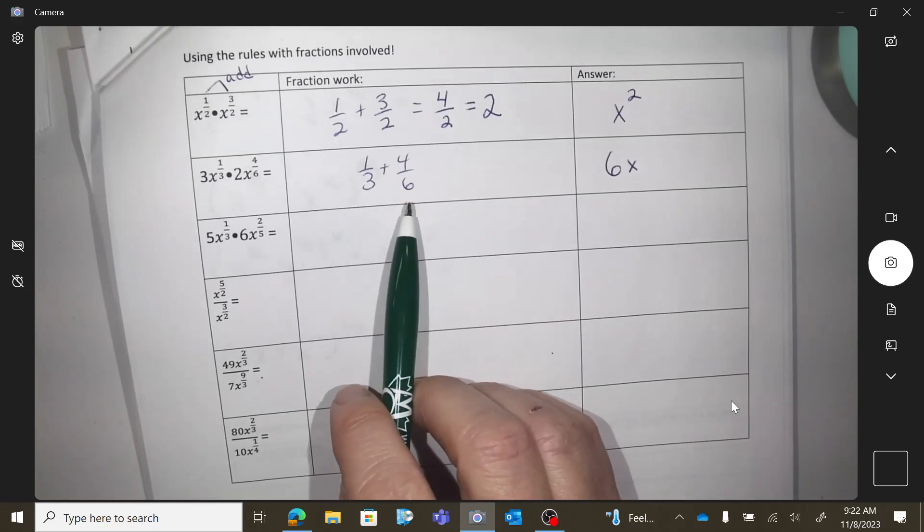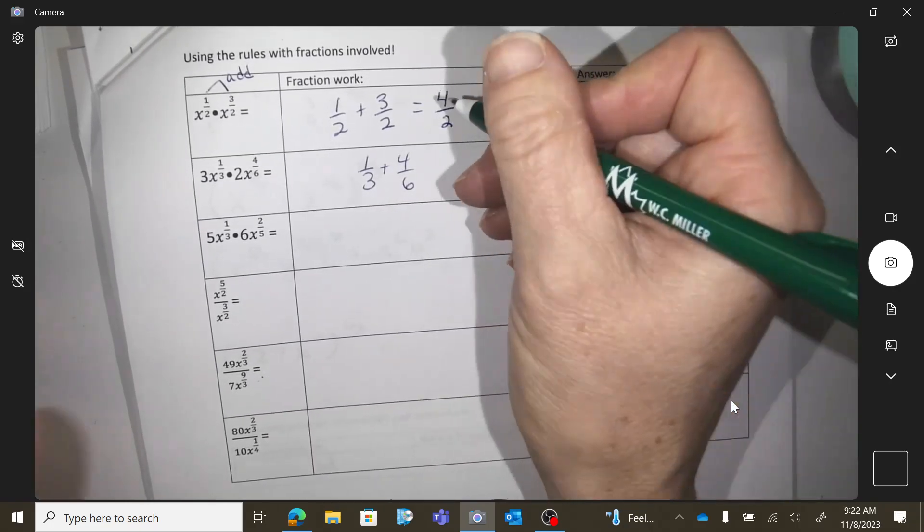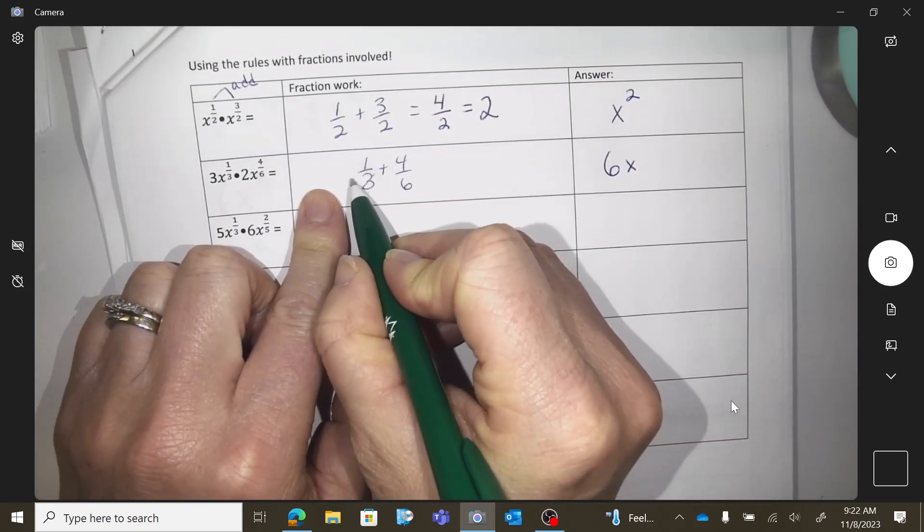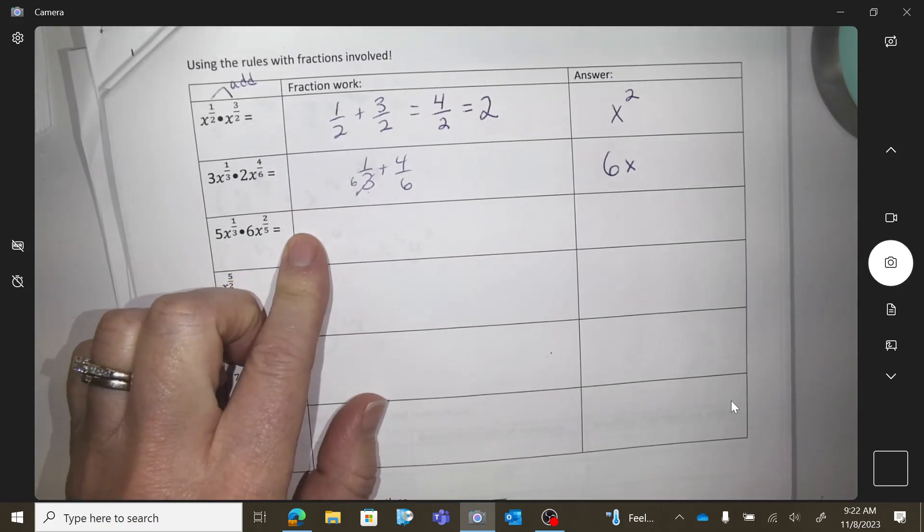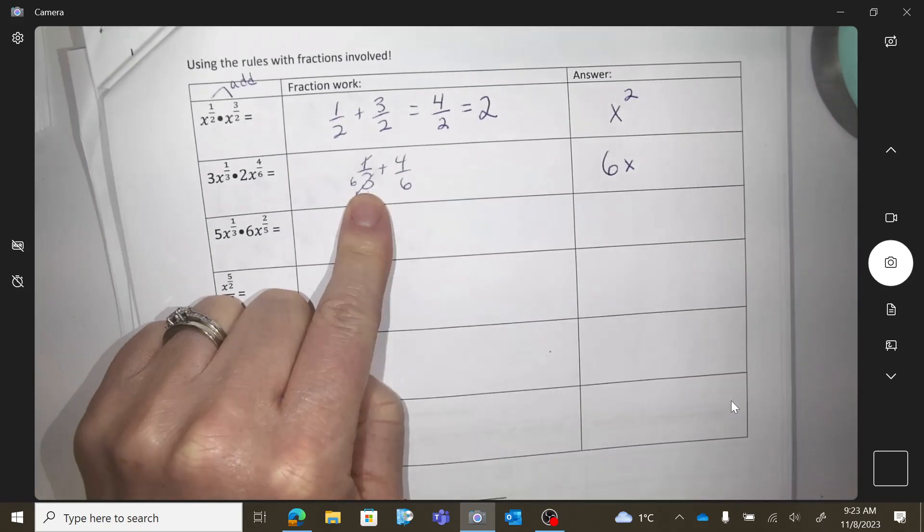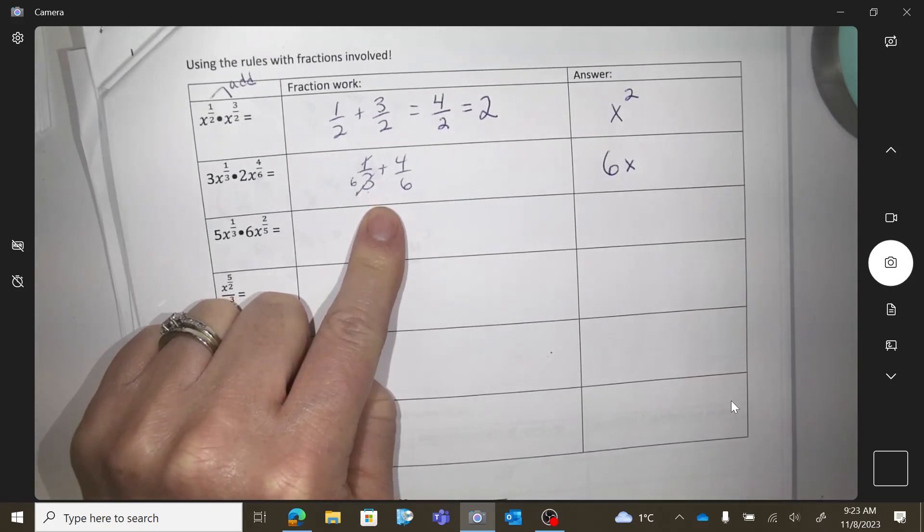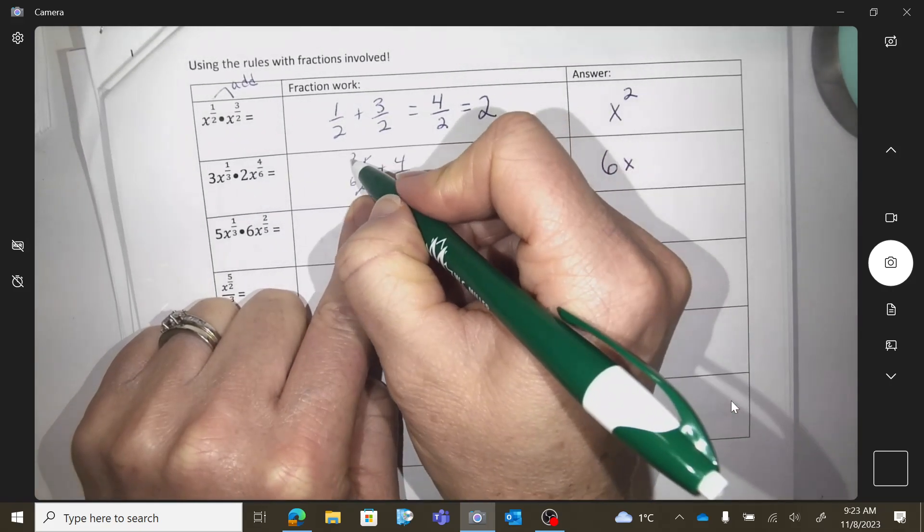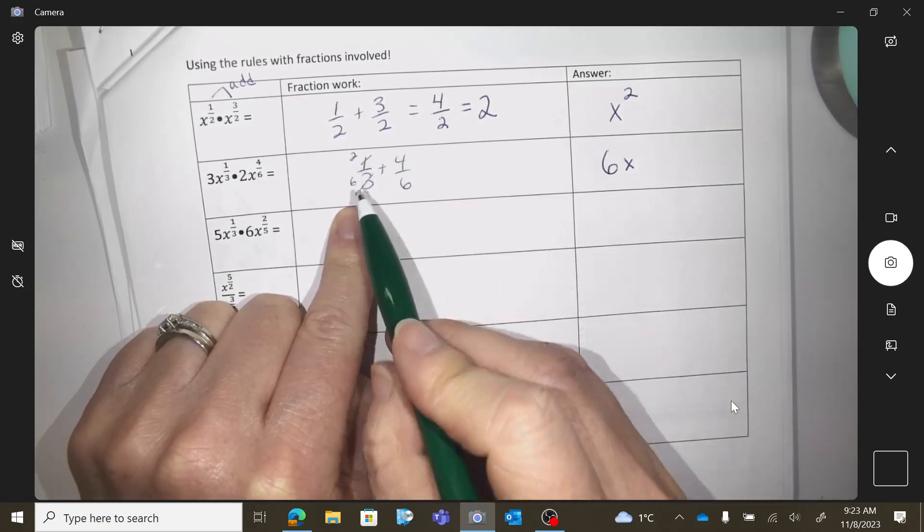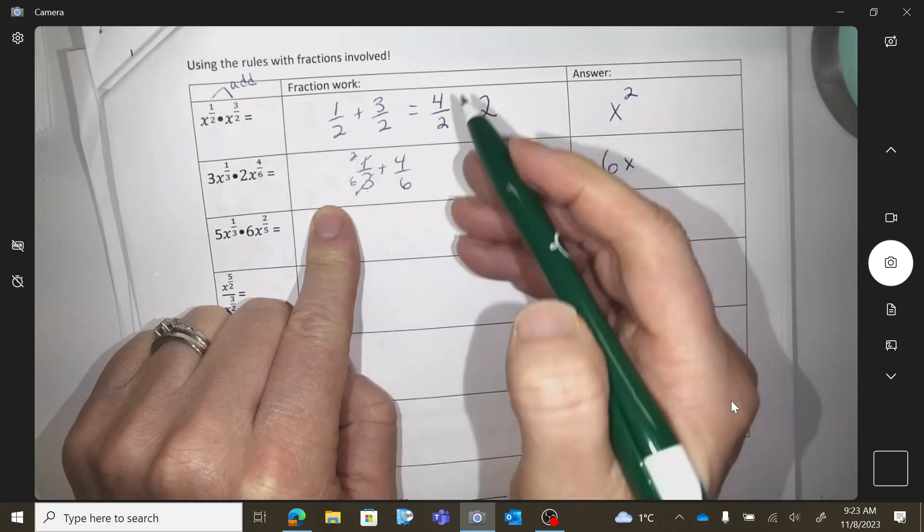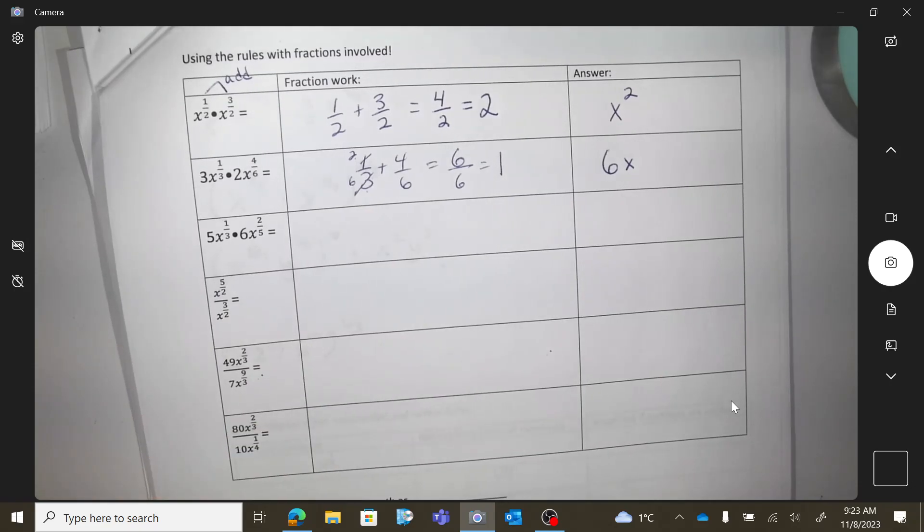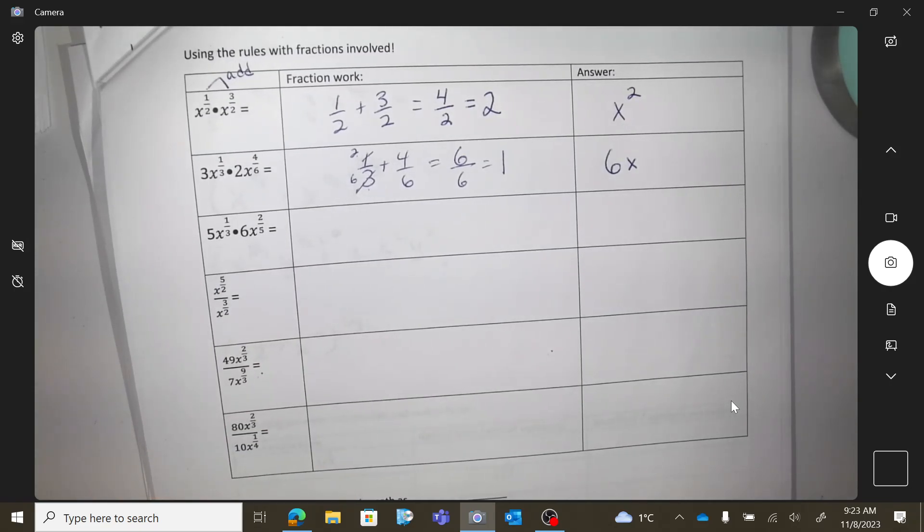Okay, do these have the same bottoms? No. So I would like to turn this bottom into a 6. But if I do that, what should I turn the top into? A 2. So I multiplied by 2. So I multiplied by 2. So now I have 2 plus 4. So 6 over 6, which is 1. I'm not even going to write that. You can if you want, but you don't need to.